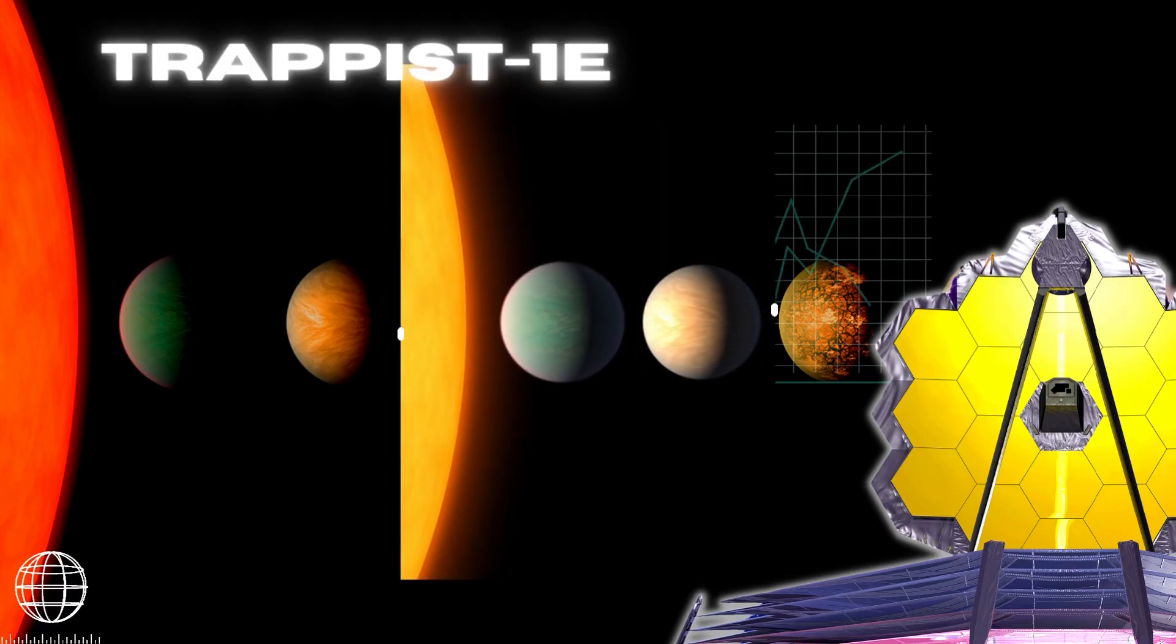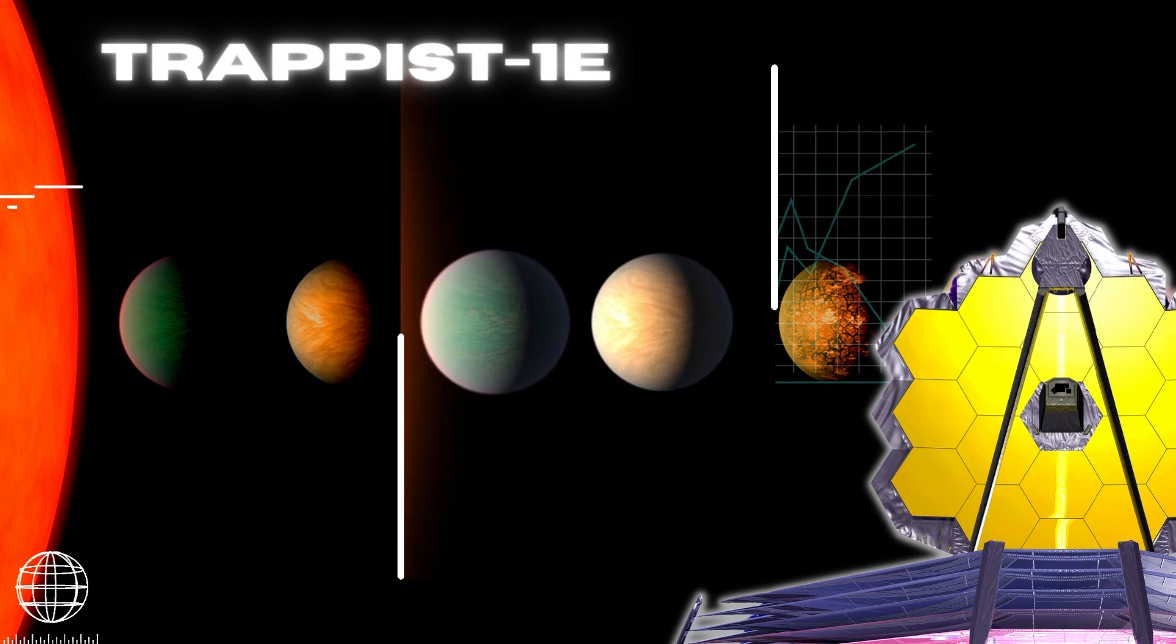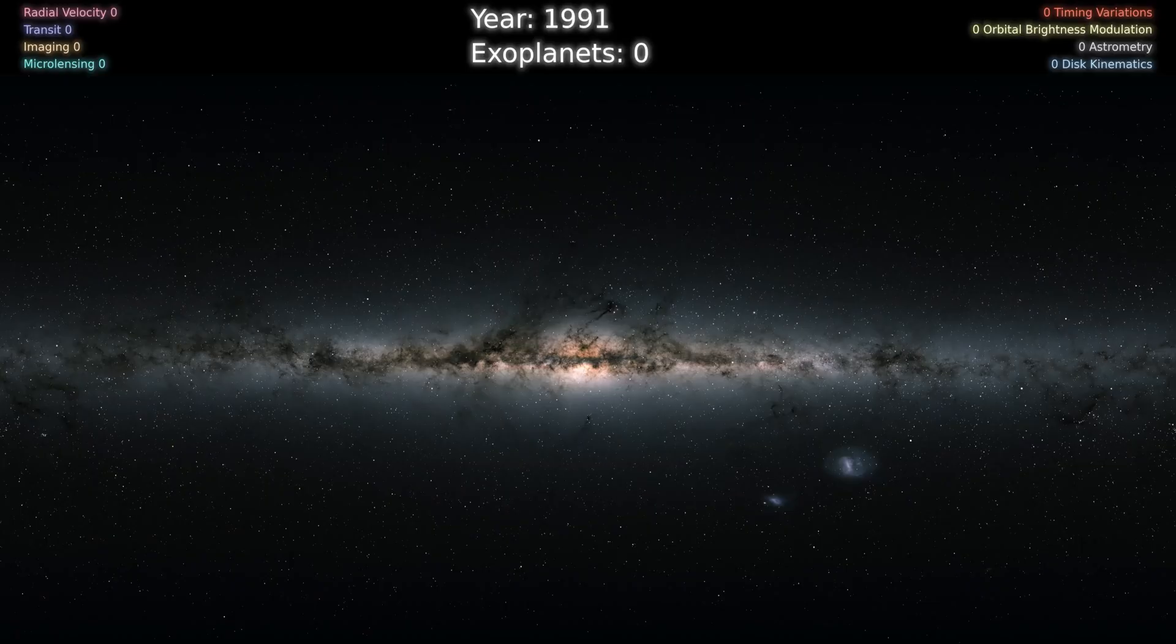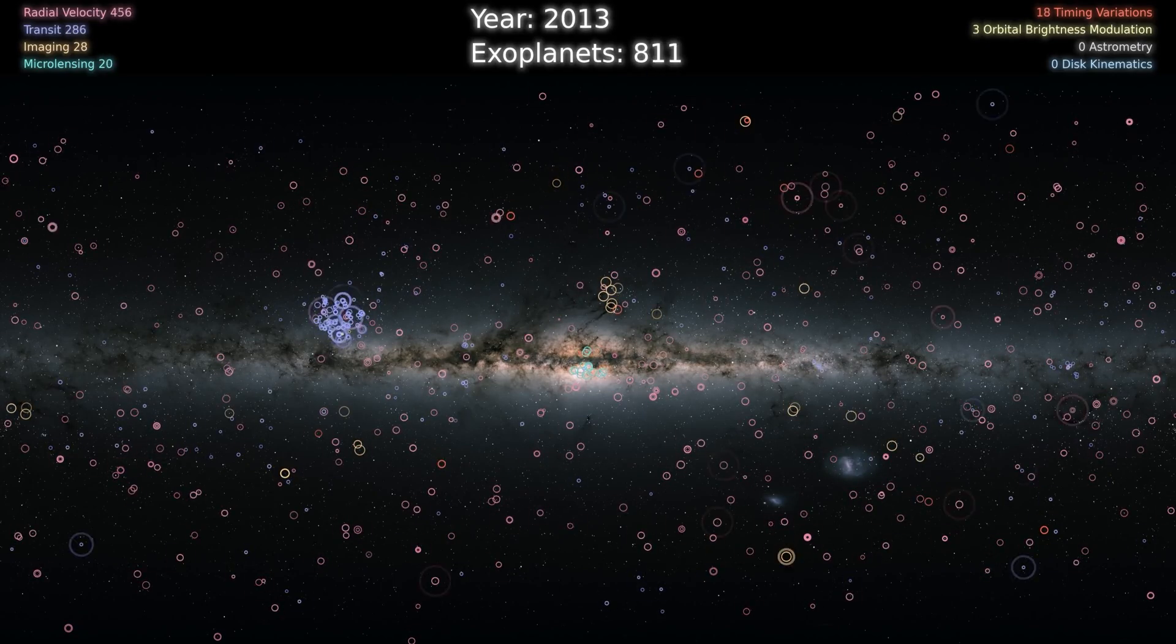And finally, the most exciting: TRAPPIST-1e. Since the first confirmed exoplanet was discovered in 1992, scientists have discovered over 5,000 alien planets orbiting faraway stars. TRAPPIST-1e is one of the planets that James Webb will directly examine.